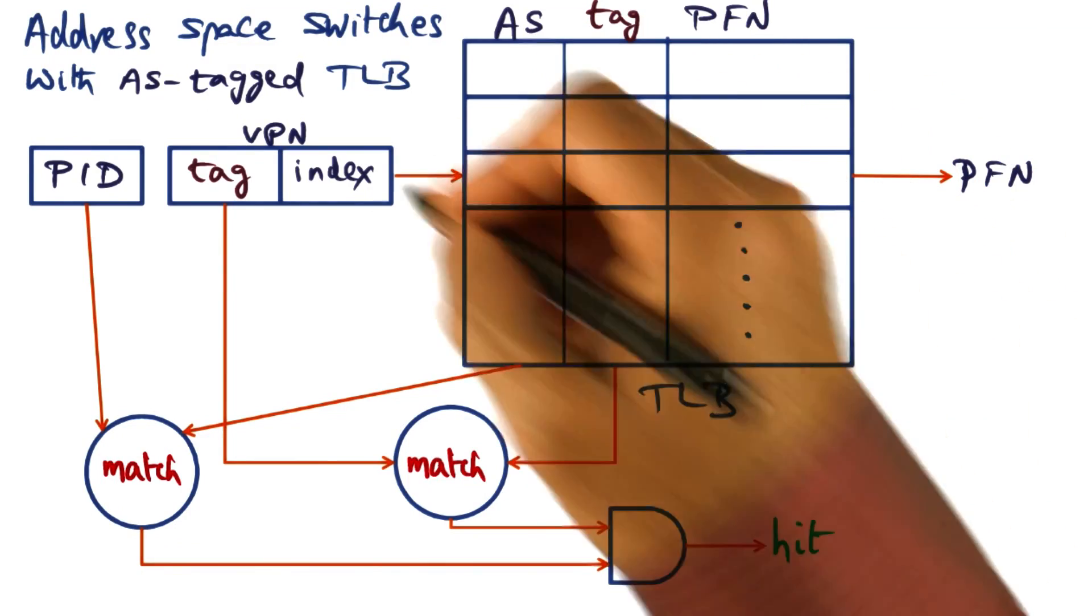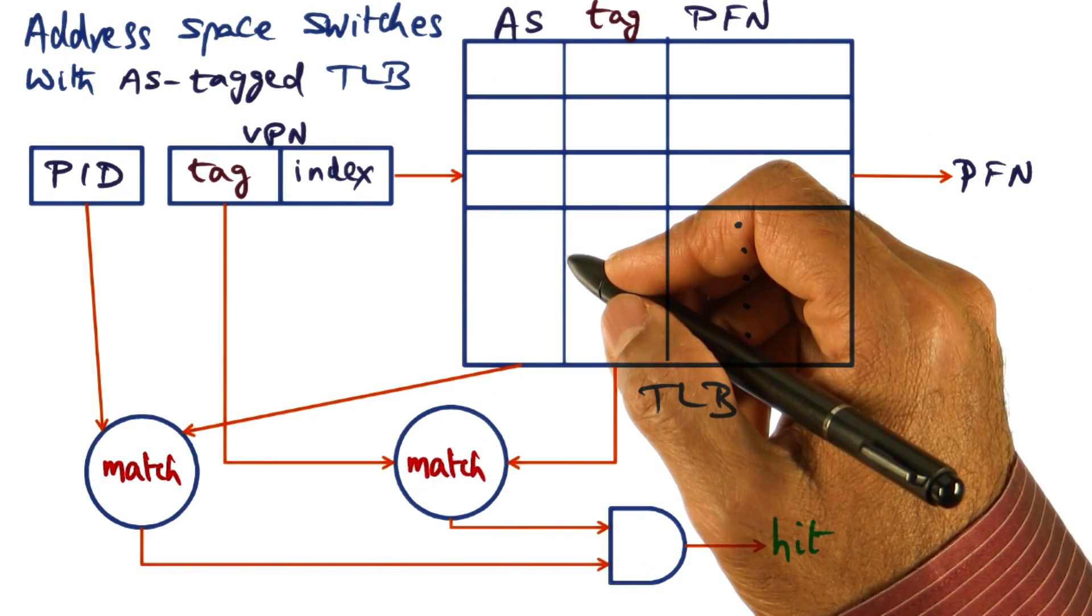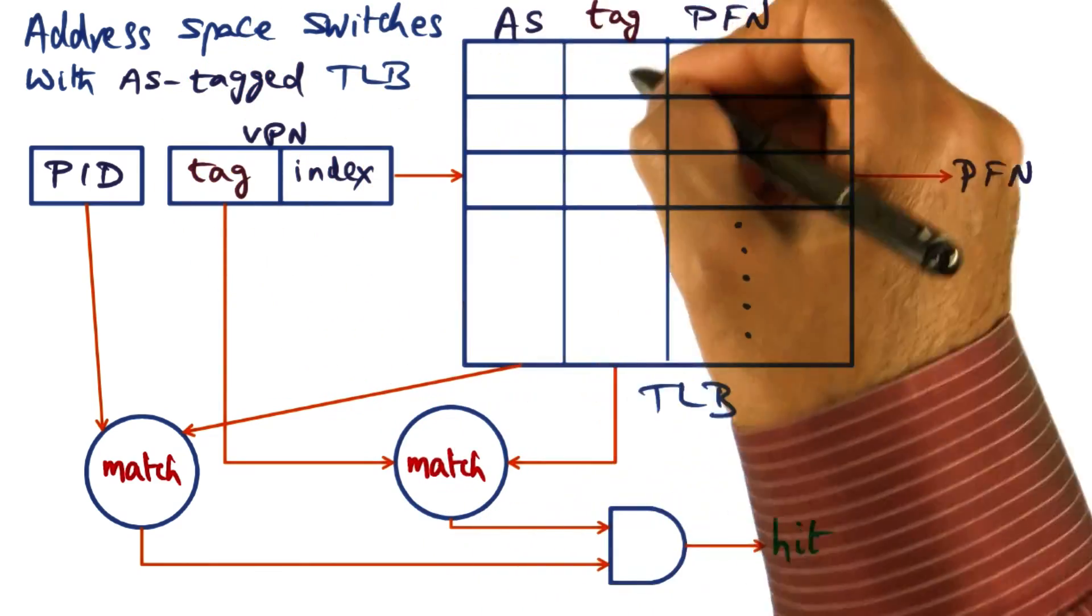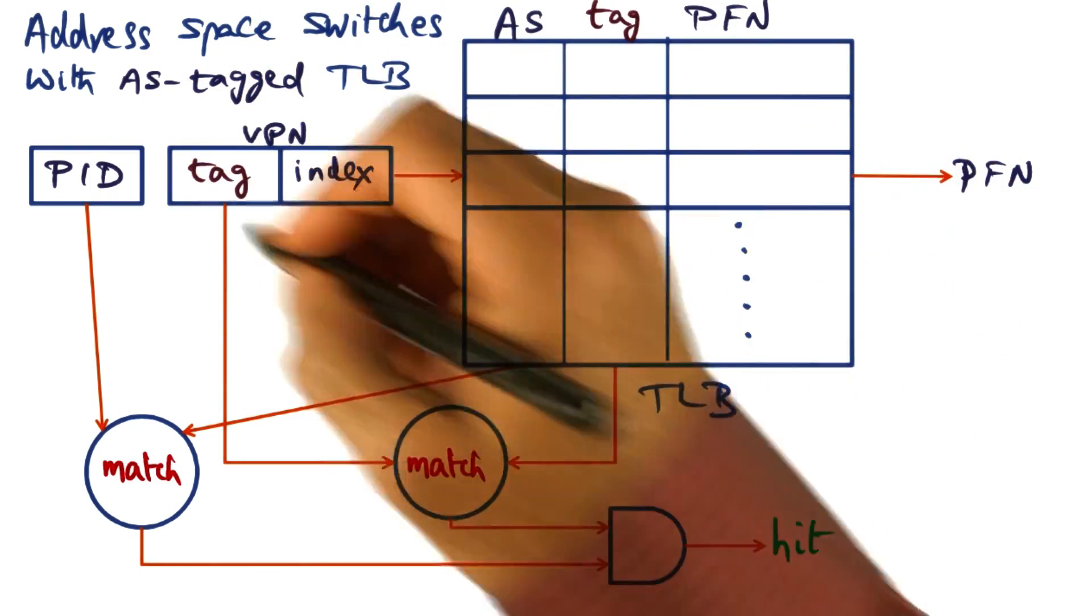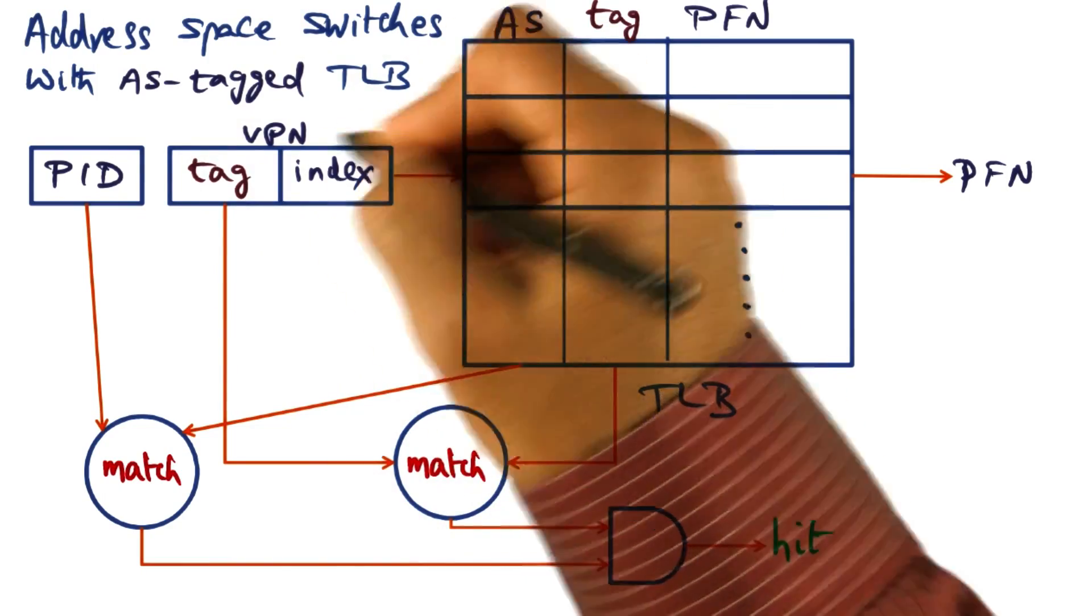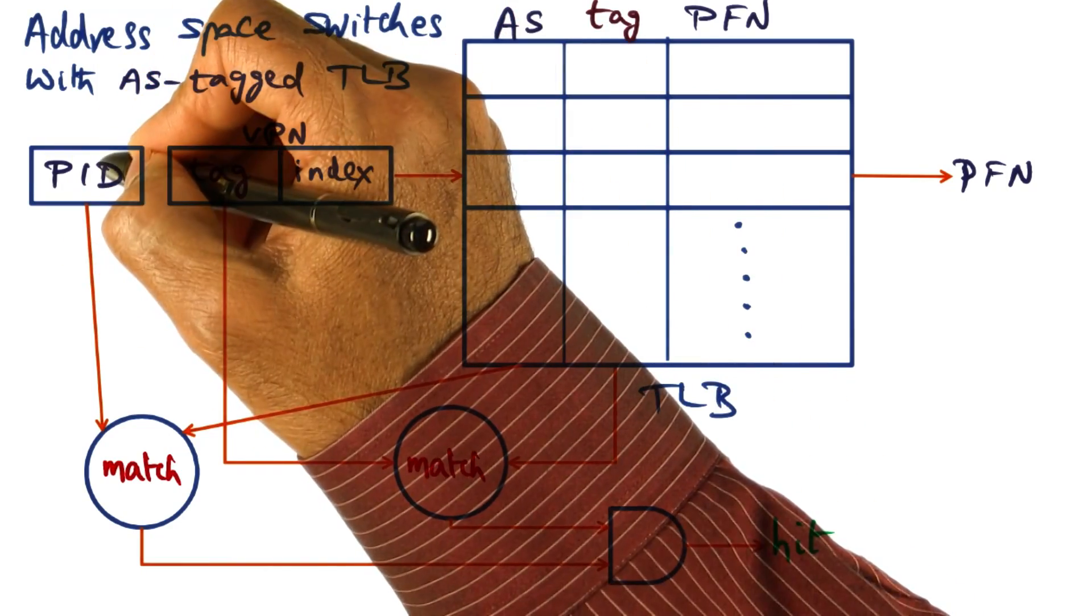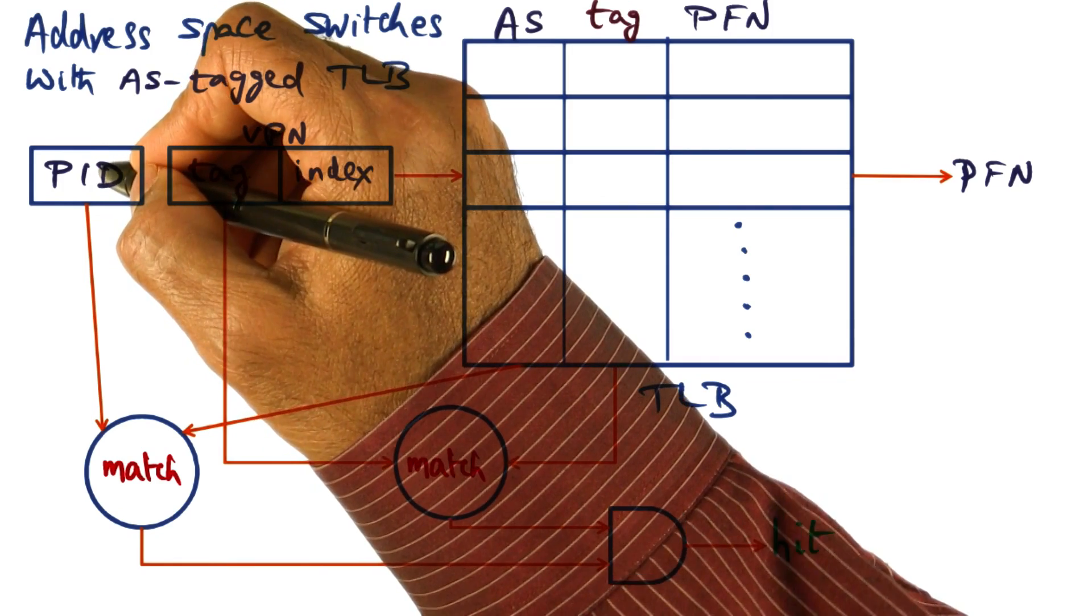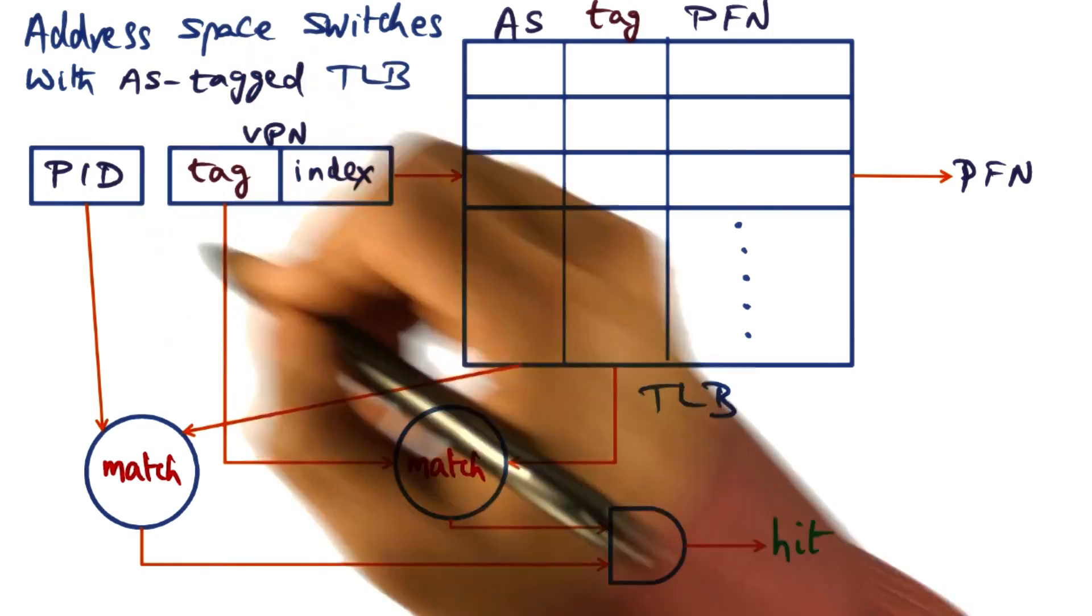Let's look at how address translations work in an architecture that supports address space tags in the TLB. Recall that virtual addresses are generated on behalf of a particular process, and the process has a process ID that is uniquely assigned by the operating system.